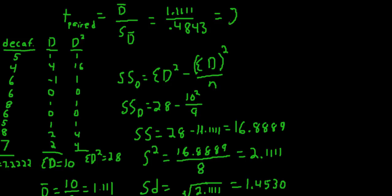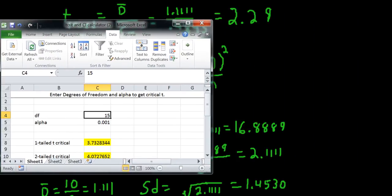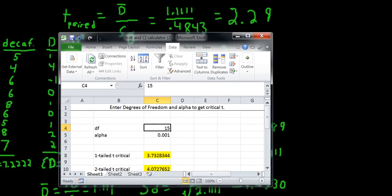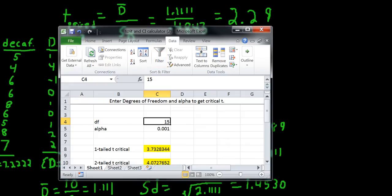So that tells us that these two means are a little more than 2 and a quarter standard errors apart. So we can look up either the P value that corresponds to that T observed, or we can look up the T critical value that corresponds to that T observed by entering in the degrees of freedom.